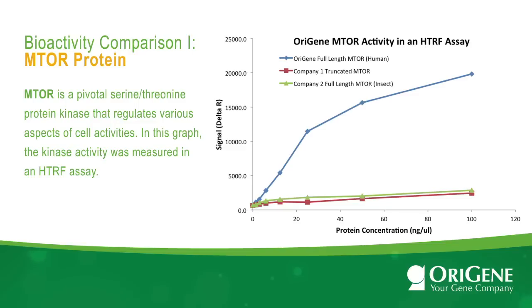The blue line represents Orygene's full-length human protein expressed from HEK-293 cells, the red line represents a truncated mTOR protein, and the green line represents the full-length mTOR from insect cells. For screening an inhibitor or an interacting molecule, it is clear which mTOR protein product should be used.